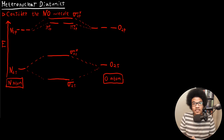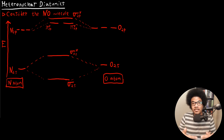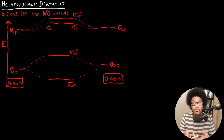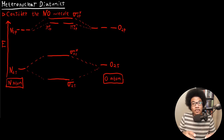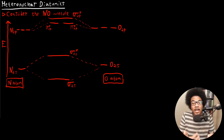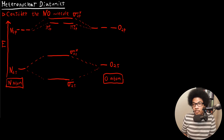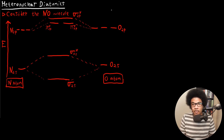In this video, I want to discuss heteronuclear diatomics. Every example we've looked at thus far has been a homonuclear diatomic — things like H2, N2, B2, O2 — where the exact same atom is involved both times. What happens when you have a bond between two different atoms? That's a heteronuclear diatomic. Let's look at an example.